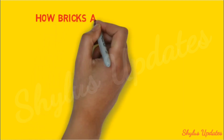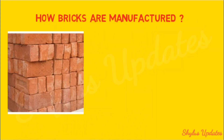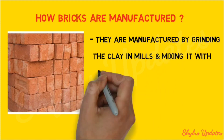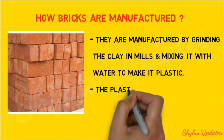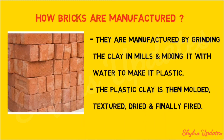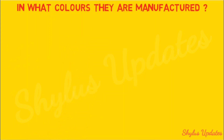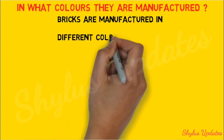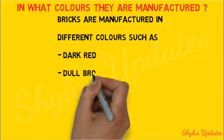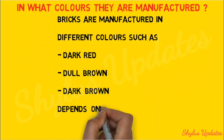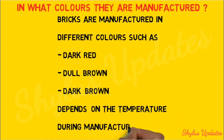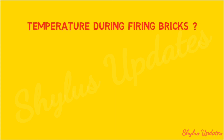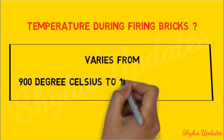How are bricks manufactured? They are manufactured by grinding the clay in mills and mixing it with water to make it plastic. The plastic clay is then molded, textured, dried, and finally fired. Bricks are manufactured in different colors such as dark red, dull brown, and dark brown, which depends on the temperature during firing. The temperature during firing bricks varies from 900 degrees Celsius to 1200 degrees Celsius.